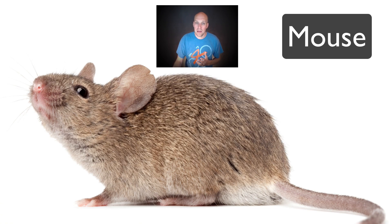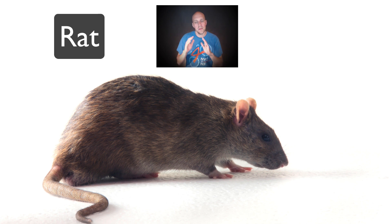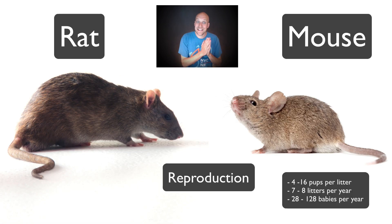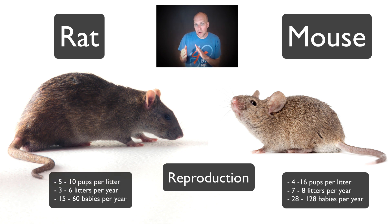Mice are usually more varied in color but are most commonly brownish in tone. They like to live in dark places and love to burrow and nest. Wild rats are always brown to darker brown or black. Mice have hairy tails about the same length as their bodies, with smaller feet and large ears. Rats have hairless tails about the same length as their bodies, with large feet and small ears. Mice produce about 4 to 16 pups per litter and around 7 to 8 litters per year — meaning one female mouse can produce anywhere from 28 to 128 babies a year. Rats produce about 5 to 10 pups per litter and around 3 to 6 litters per year, meaning one female rat can produce 15 to 60 pups per year.